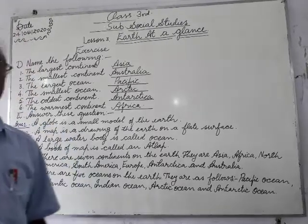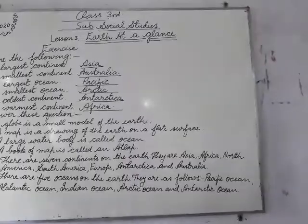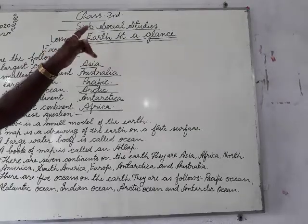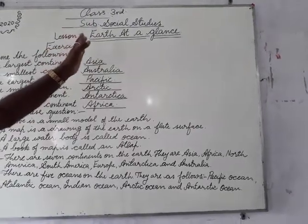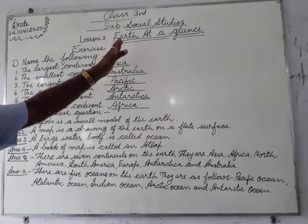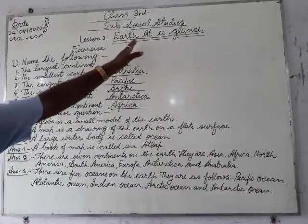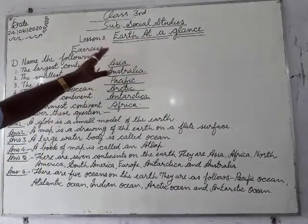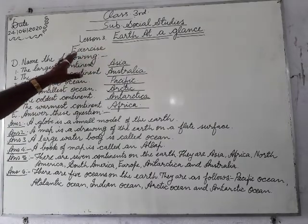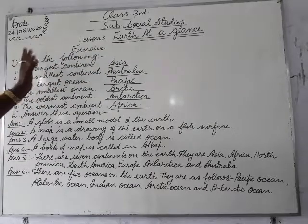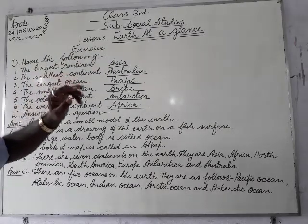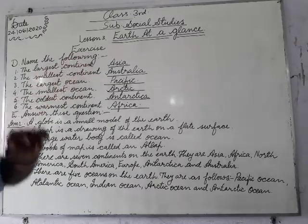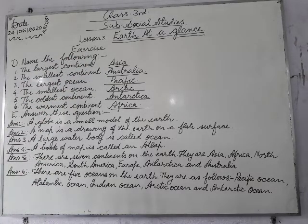Good morning children. We will see today Lesson 3 - Earth at a Glance, exercise number D: Name the following. We have to put the answer in one word.